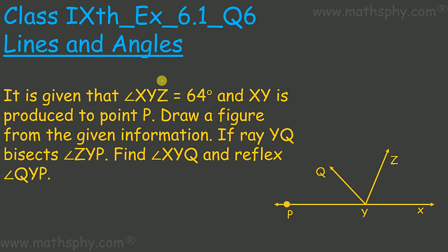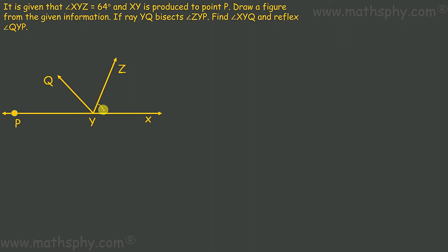It is given that angle XYZ is 64 degrees — this angle here is 64 degrees. XY is produced to point P. Draw a figure from the given information. This is the figure here. A ray YQ bisects angle ZYP — this angle is being bisected by YQ. We need to find angle XYQ and the reflex of angle QYP.